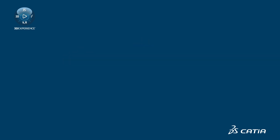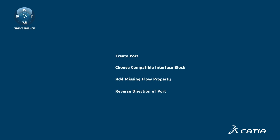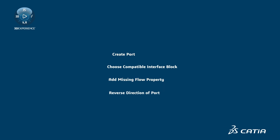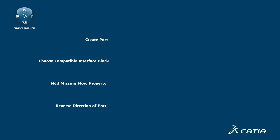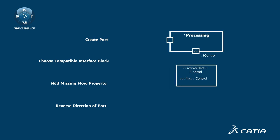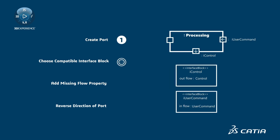Validation will warn you of any missing flows identified and suggest specific solver actions. There are four solver actions: Create Port, Choose Compatible Interface Block, Add Missing Flow Property, and Reverse Direction of Port.